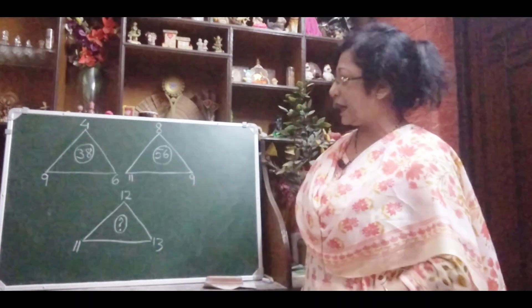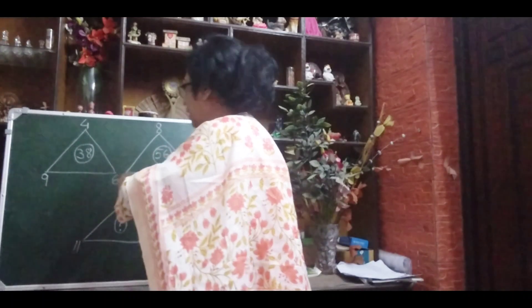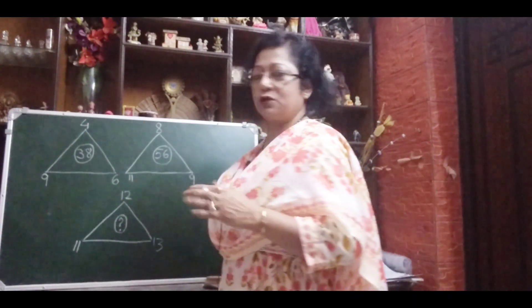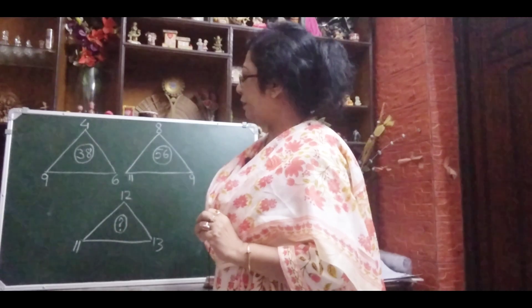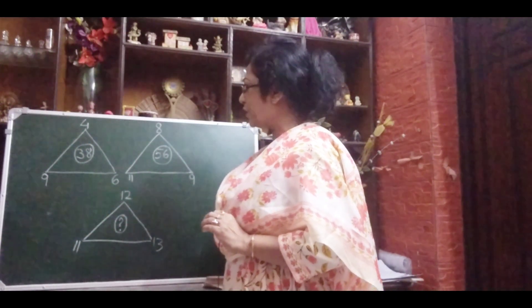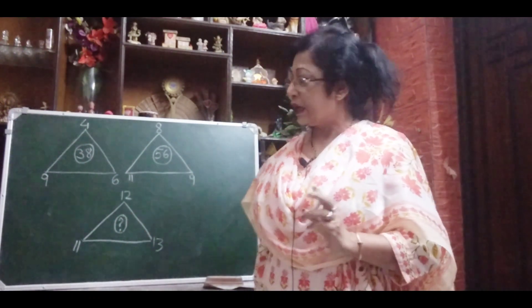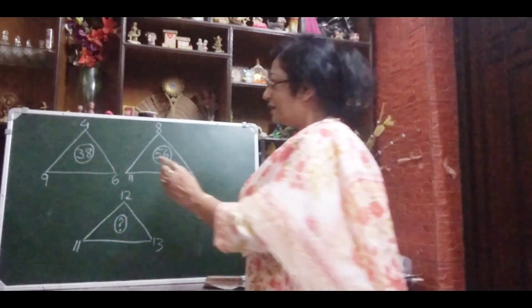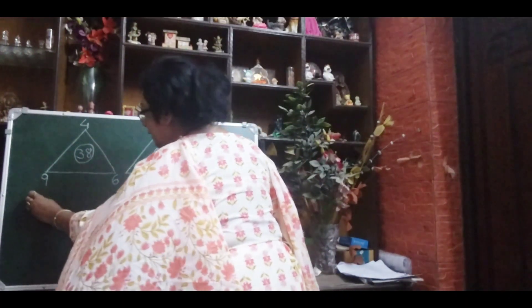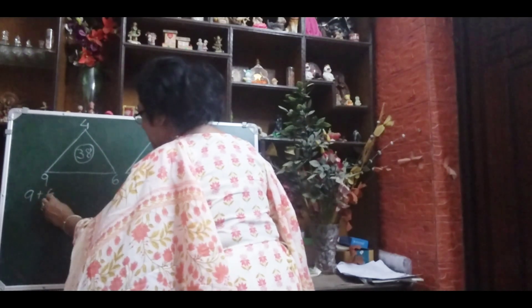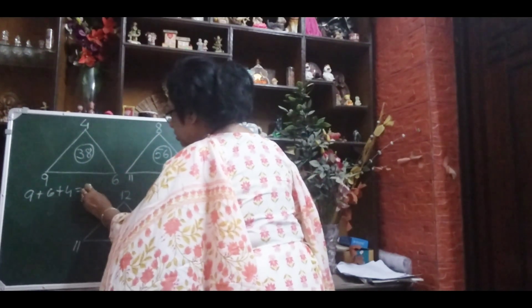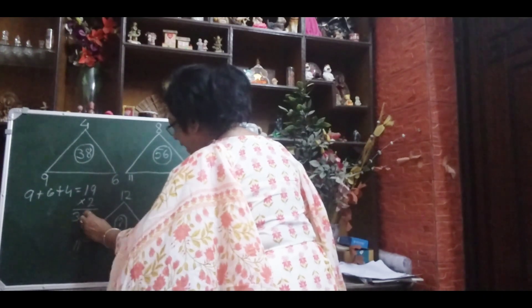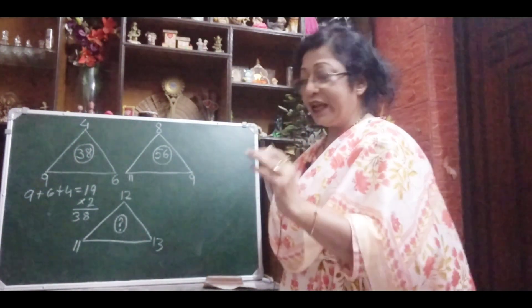If we multiply 9 by 4 we get 36, and 36 plus 6 gives 42 — not 38, so that doesn't work. Let me try adding: 6 plus 4 is 10, 10 plus 9 is 19. Now 19 is a factor of 38 — 19 multiplied by 2 gives 38. So what I did is: 9 plus 6 plus 4 equals 19, and 19 multiplied by 2 gives 38. We got 38!